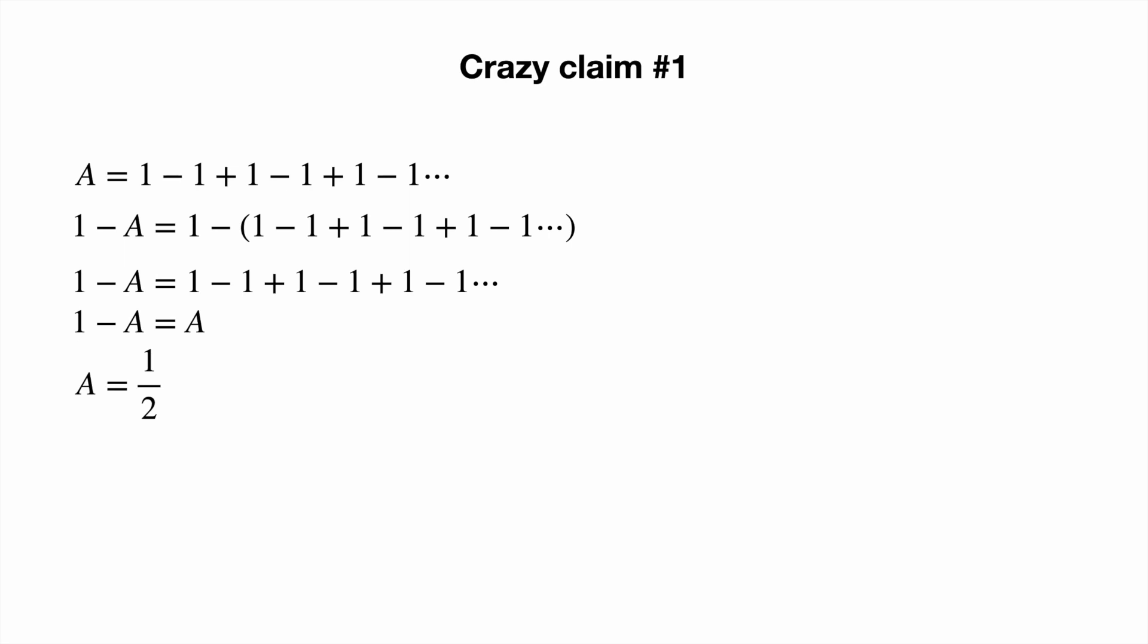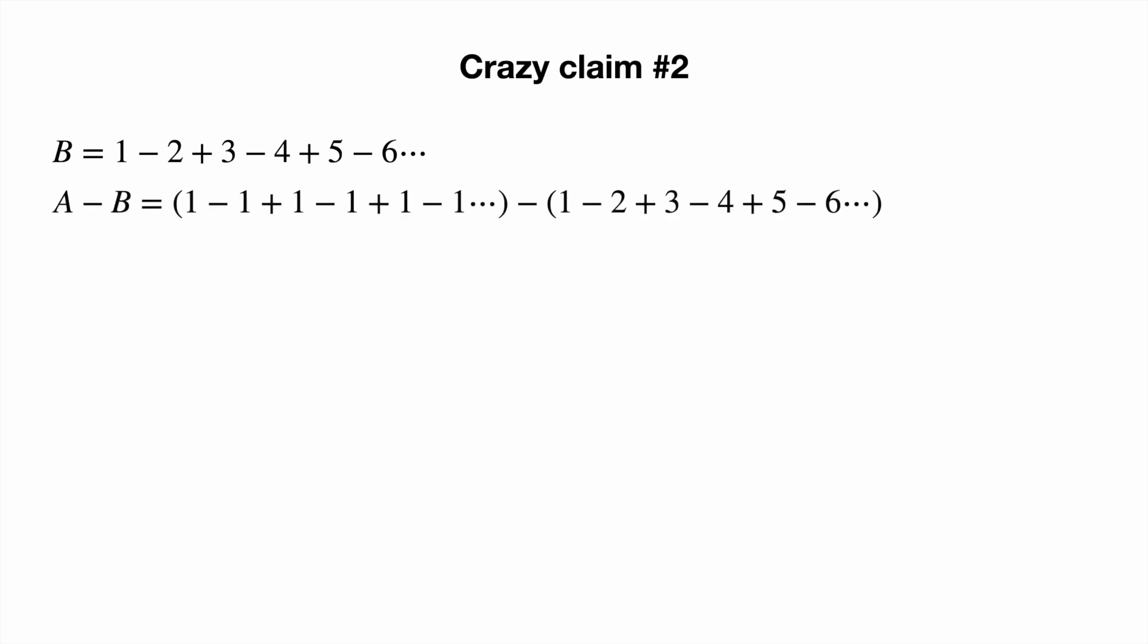Now time to prove crazy claim number 2. We start the same way as with A, letting the series B equal 1 minus 2, plus 3 minus 4, plus 5 minus 6 and so on. Then we can start to manipulate it.